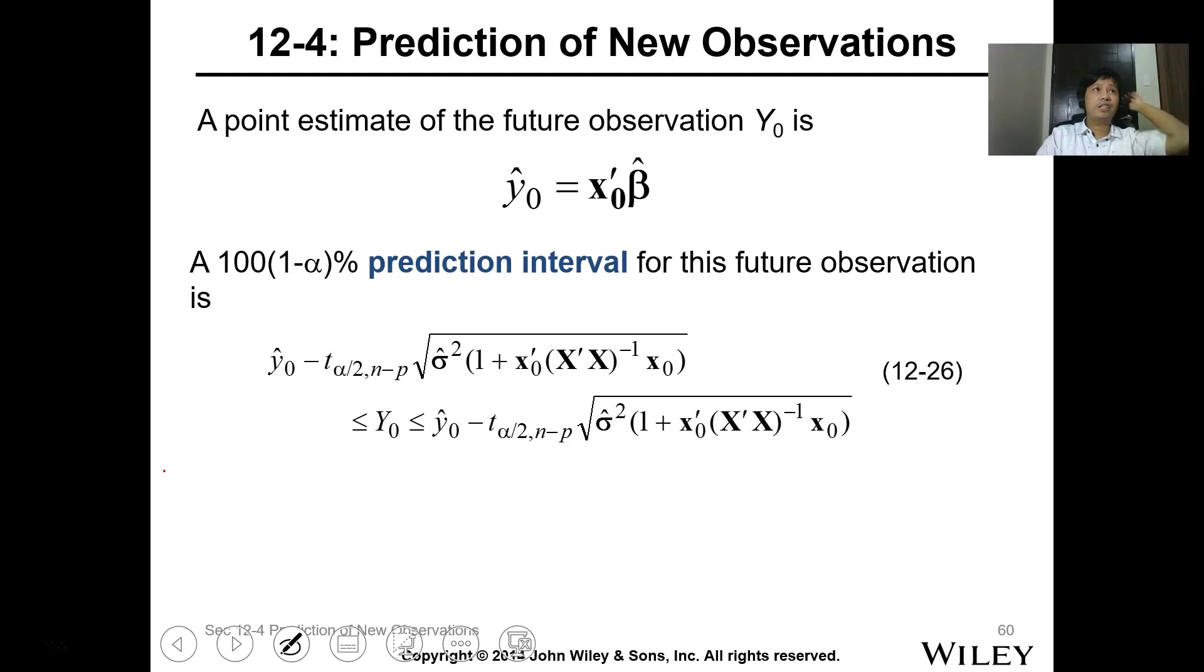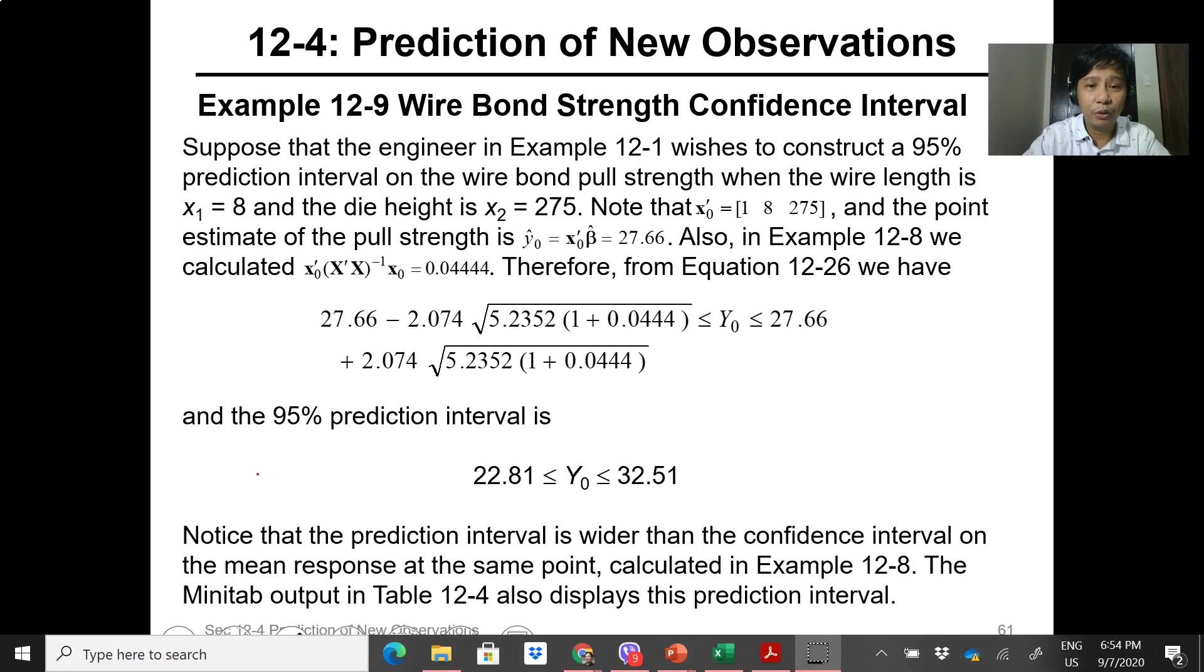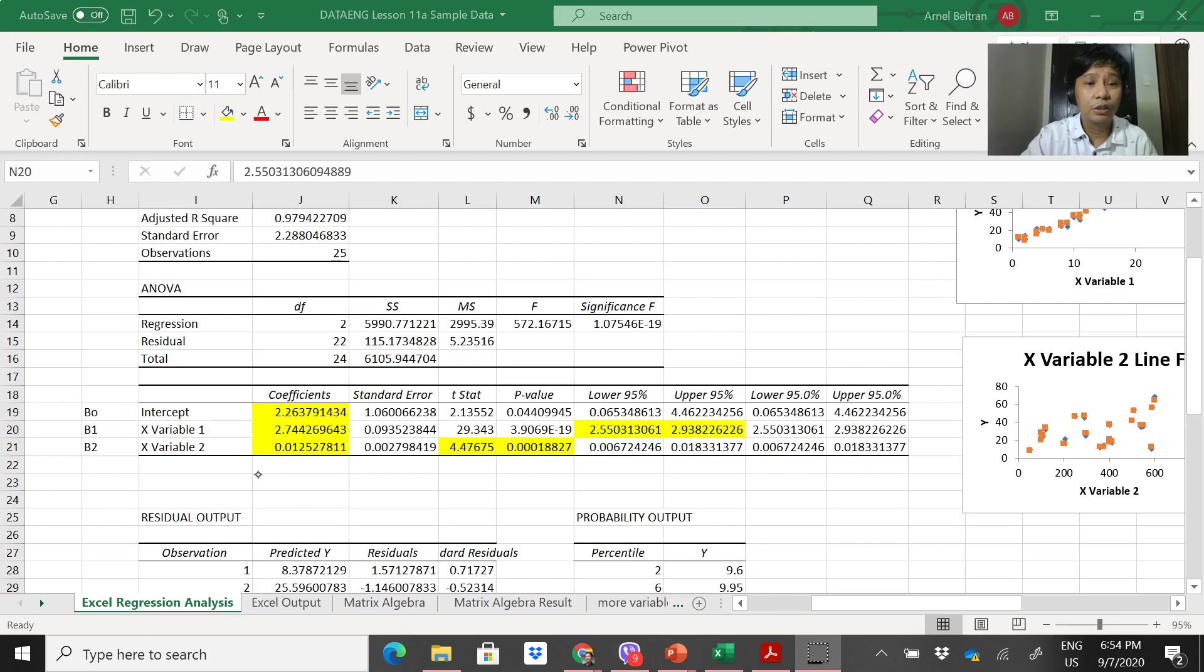Now, what's critical for us is the prediction of new observation. So the prediction of new observation - just substitute the value and you can also have a prediction interval. But that's not usually asked either.